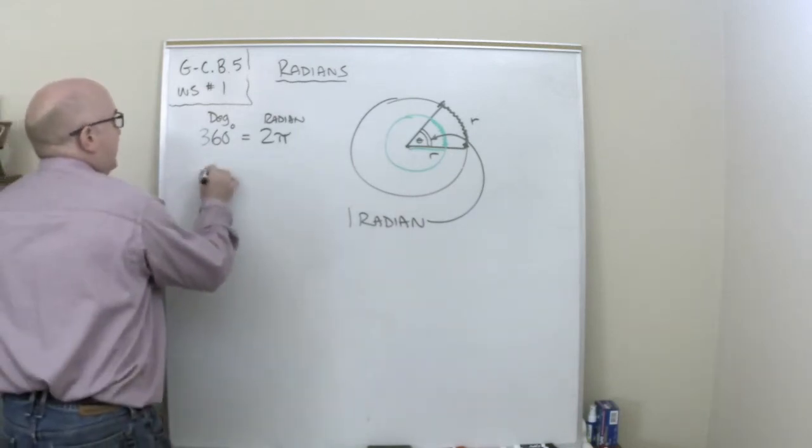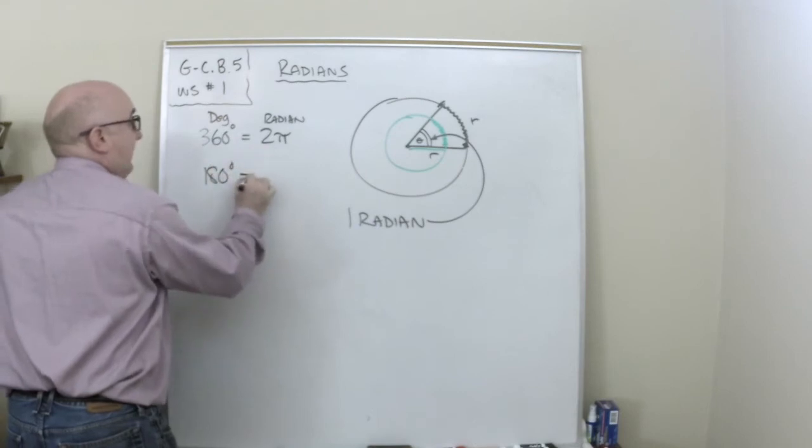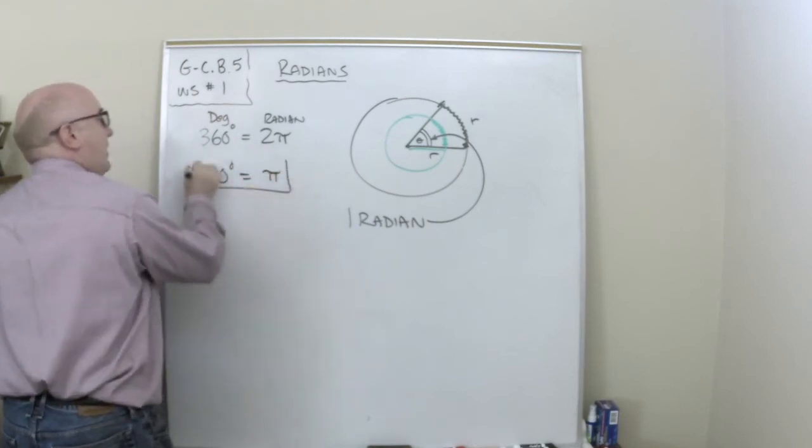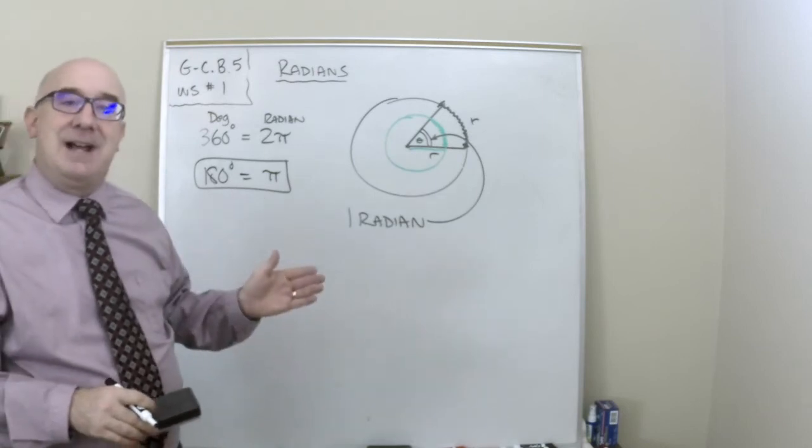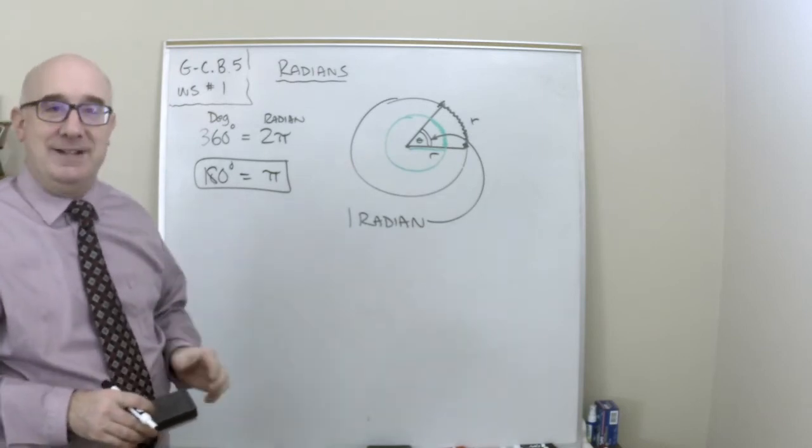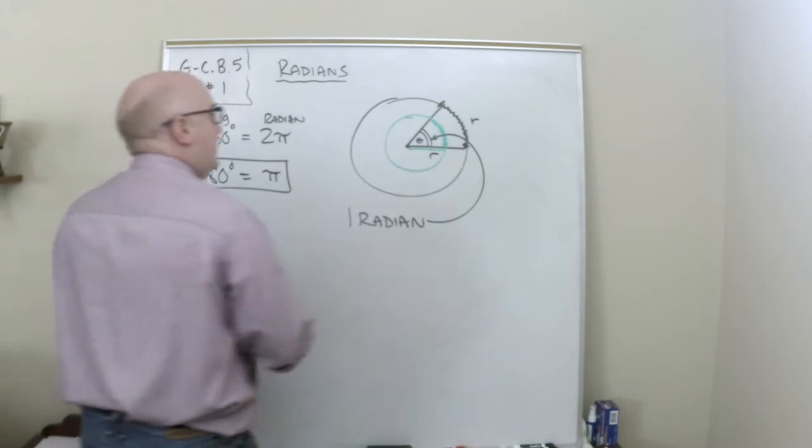Now there's some other nice conversions. We can take this by half and this by half. Whoa, that's cool. 180 degrees is exactly pi radians. Now that makes sense, doesn't it?